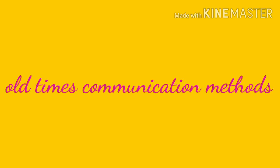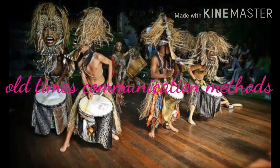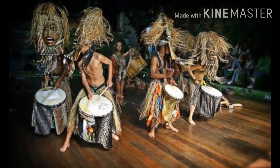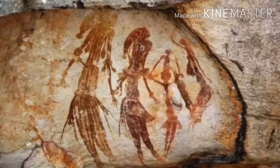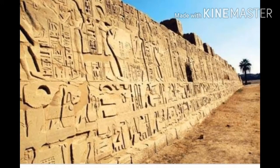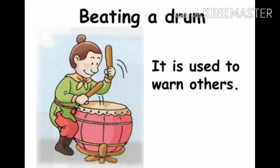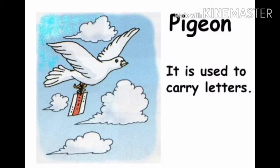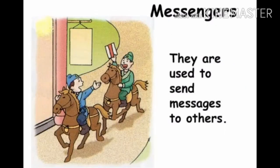Let's talk about old times communication methods. In earlier times, human beings had different means to share their thoughts, ideas, joy, and sorrow with each other. For example, they used drum beating, smoke signals, painting on caves, and written work on clay tablets. Such methods were used to convey messages, information, or to express themselves to each other.